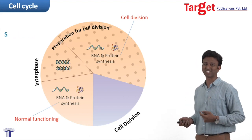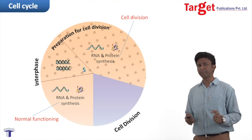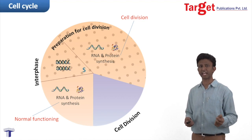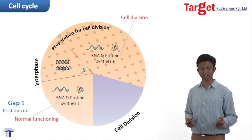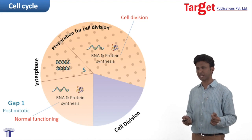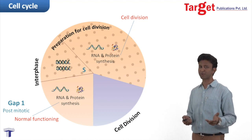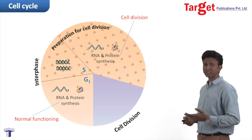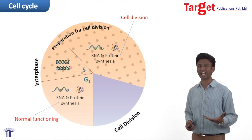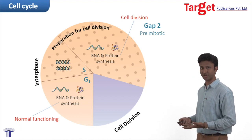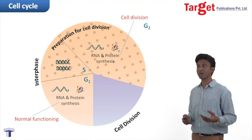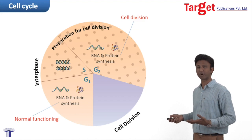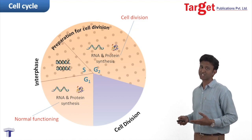DNA synthesis does not happen immediately after cell division. There is a time gap before DNA synthesis can take place, and this gap is called Gap 1 or post-mitotic gap — 'post' because it comes after cell division. This is simply called G1. Similarly, cell division does not happen right after DNA synthesis. There is a time gap called Gap 2 or pre-mitotic gap — 'pre' because it comes before cell division. This is called G2. So if we look at the interphase, there are three phases: G1, where the cell synthesizes RNA and proteins required for normal functioning, and the S and G2 phases, where the cell starts preparing for cell division.